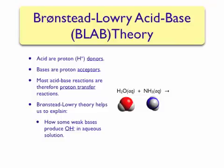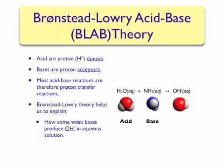However, if we use Bronsted-Lowry acid-base theory, it is an easy explanation. We can describe water as an acid, or proton donor, while ammonia is the base, meaning it accepts a proton from water. When water loses a proton it becomes OH-, and this is where the hydroxide ion comes from when ammonia is dissolved in water through a proton transfer reaction. When ammonia accepts a proton from water it becomes NH4+ or the ammonium ion. Therefore, ammonia increases the hydroxide ion concentration by accepting a proton from some water molecules, but it does so weakly — and this is why ammonia is a weak base.